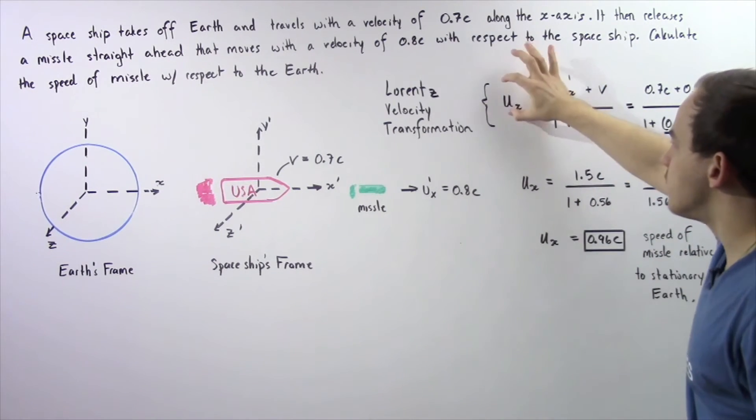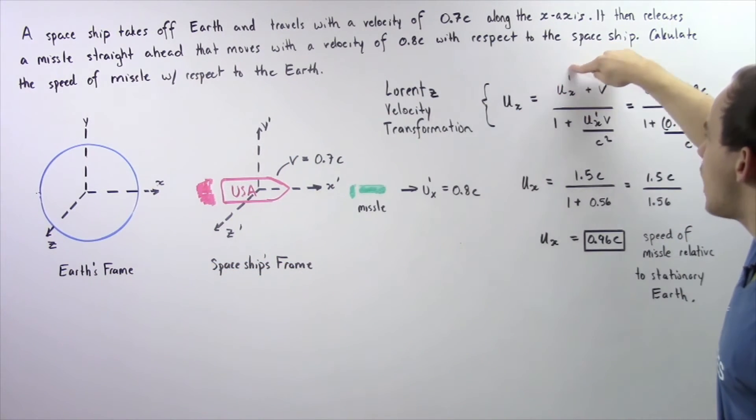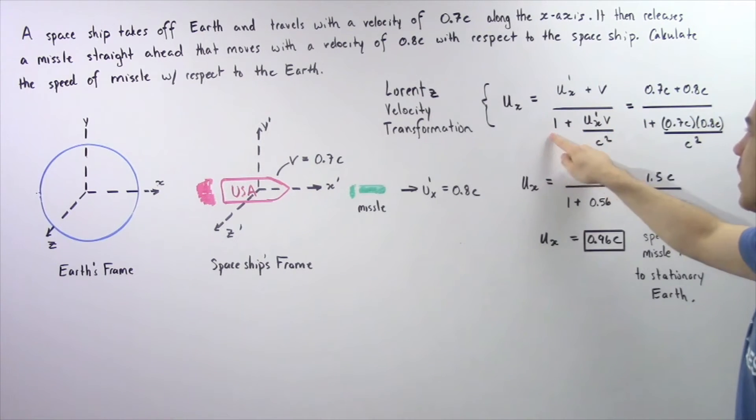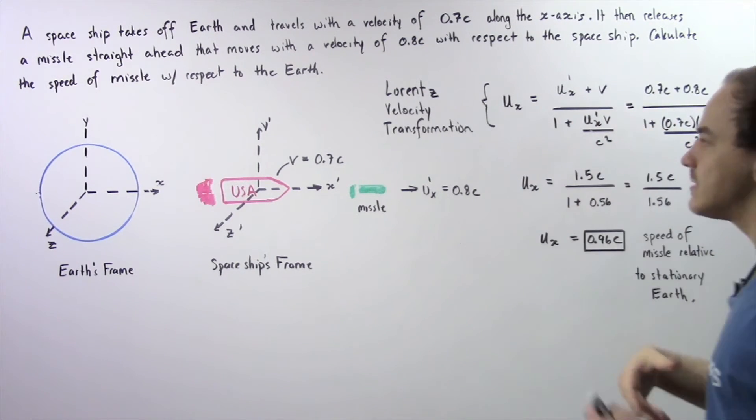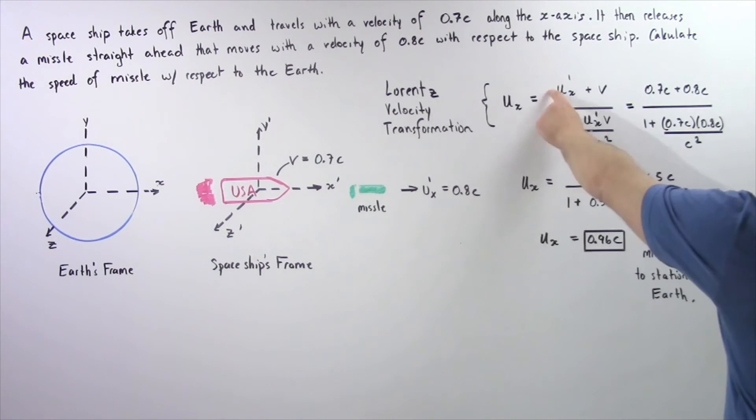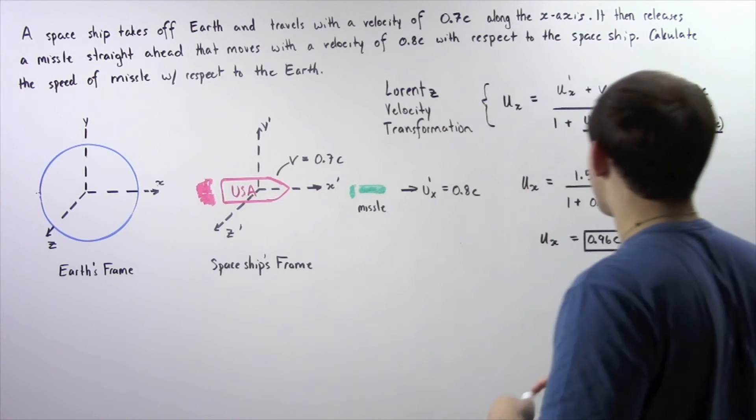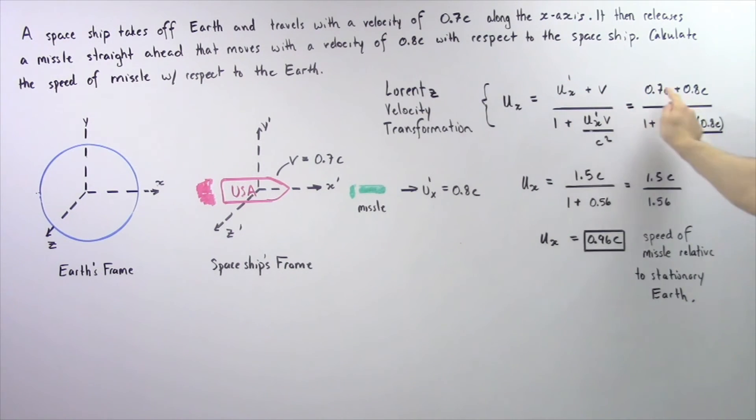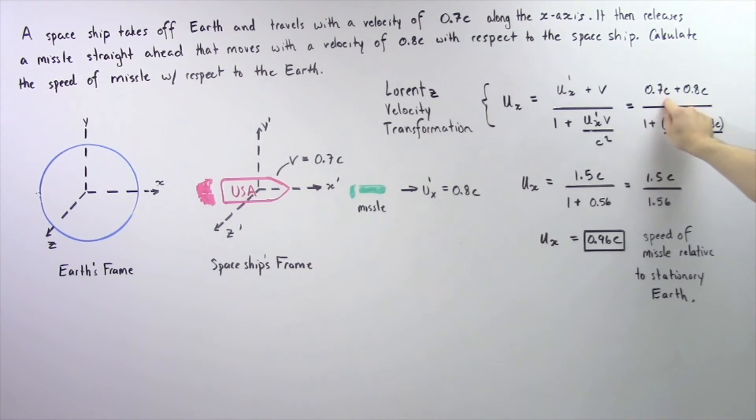ux, the velocity of the missile with respect to the Earth's frame, is equal to u prime x plus v divided by 1 plus u prime x times v divided by c squared, where c is the speed of light in a vacuum, v is the velocity of the frame (the velocity of our spaceship), and u prime x is the velocity of that missile with respect to the spaceship's reference frame. This quantity is 0.8c and the velocity of the spaceship is 0.7c. So we add these two and get 1.5c.